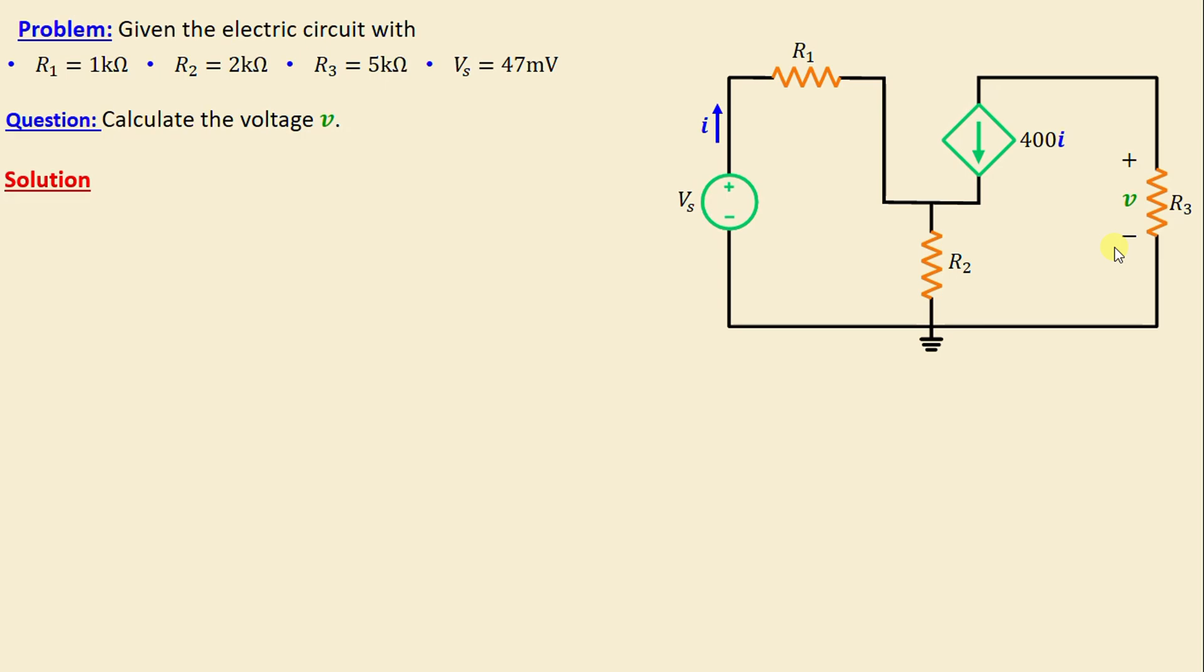First, let's begin by defining the number of meshes in this network. It's evident that there are two meshes: this is mesh number one and this is mesh number two. Now let's proceed to assign the mesh currents. I will consider i1 as the current in mesh one and i2 as the current in mesh two, both currents are chosen in the clockwise direction.